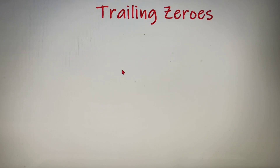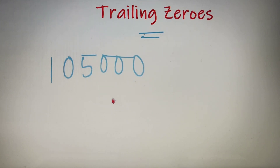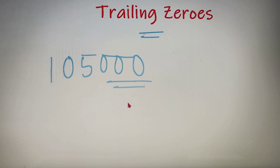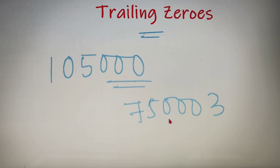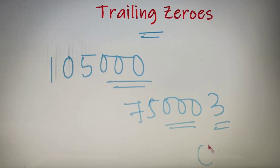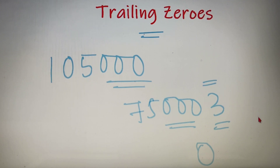Now before learning how, let us first understand what trailing zeros are. So if I have a number, let's say 105000, then the number of trailing zeros in this number is 3. Let's take another example: we have the number 750003. Now we do have three zeros at the end of this number, but the number ends in the digit 3, so the number of trailing zeros in this number is 0. Thus, the number of trailing zeros in a number is the zeros at the end of the number after the last non-zero digit.